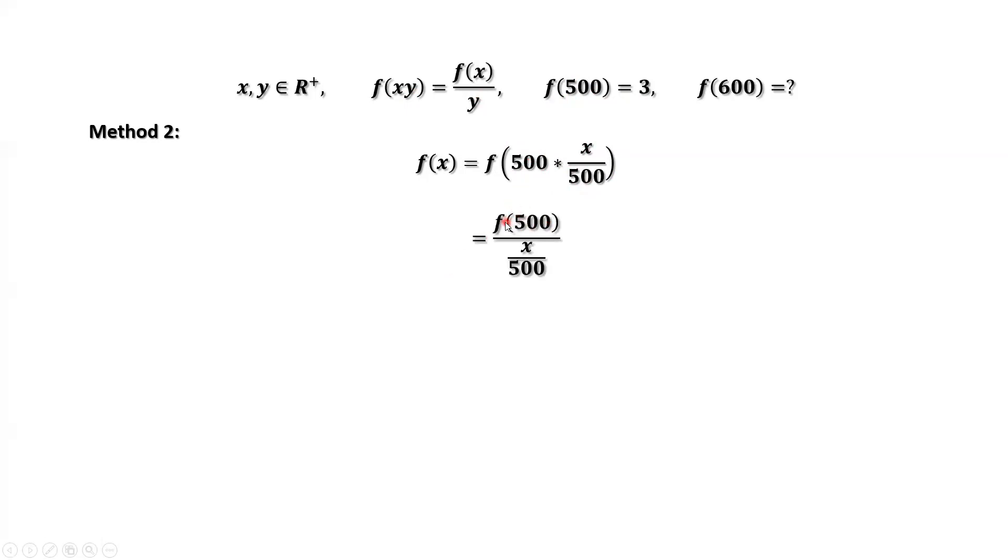f of x equals f of 500 times x over 500. f of 500. Simplify. We have 3 times 500 over x. 3 here equals f of 500. Continue to simplify. We have 1500 over x, which is f of x. We have the formula for f of x.